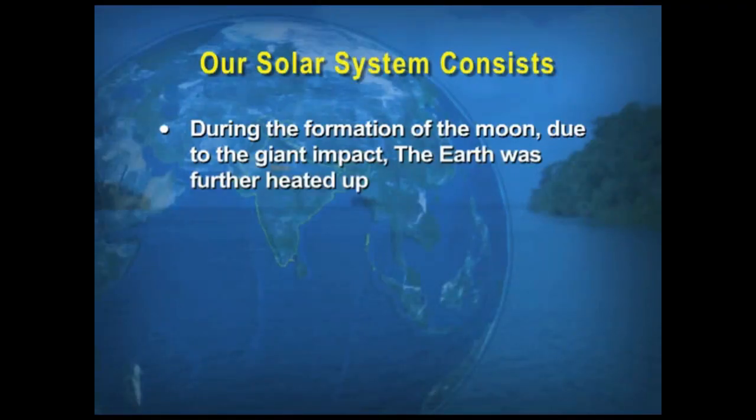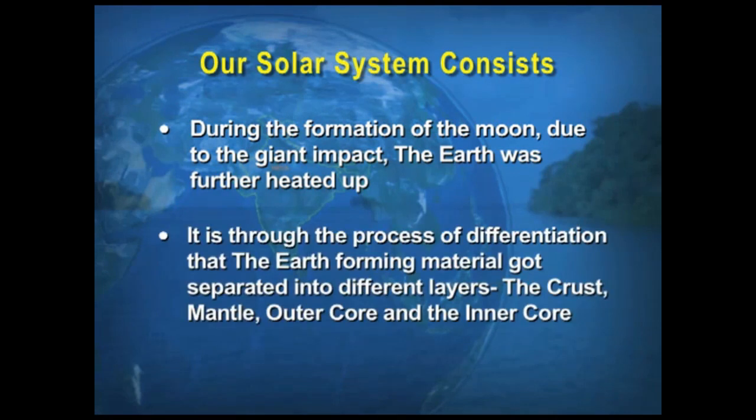During the formation of the Moon, due to the giant impact, the Earth was further heated up. It is through the process of differentiation that the Earth-forming materials got separated into different layers: the crust, mantle, outer core, and the inner core.